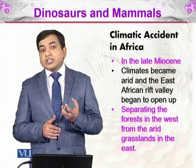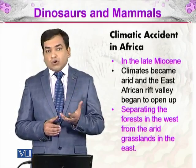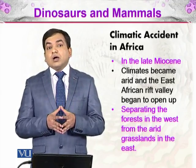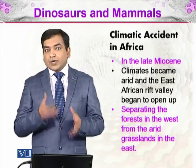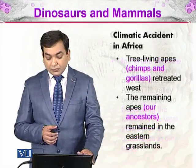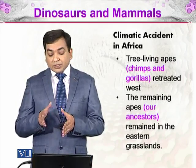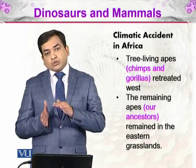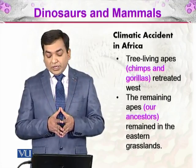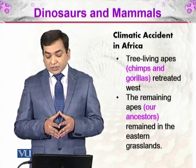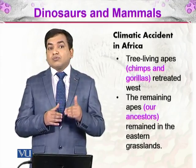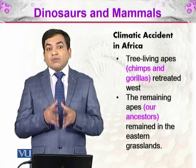The arid grasslands were dependent only on rainfall for plant growth, while the lush green forest were tropical rainforests or subtropical areas with rivers — for example, the river Niger flowing in the western part of Africa even today. The climatic change resulted in the tree-dwelling apes, which are chimps and gorillas, retreating west into the lush green forest where they could climb trees. The remaining apes — our ancestors — remained in the eastern grasslands, which had no trees.